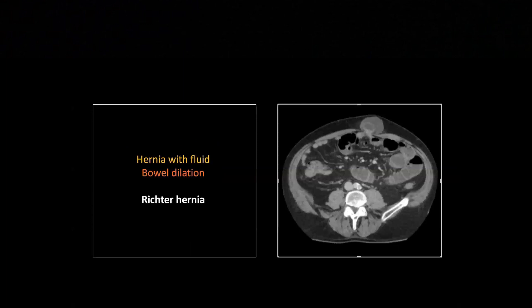The next one is a Richter hernia. In these cases, it's one wall of the bowel that herniates. This is kind of a drive-by herniation where you'll see the bowel loop going across the base of that hernia, and only the anterior wall of the involved small bowel is herniating out.